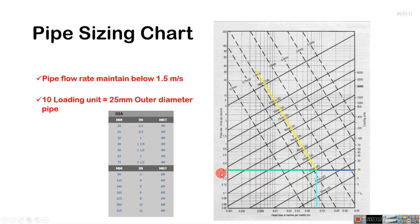Liters per second 0.3. For 10 loading unit value, we can select 25 millimeter outer diameter PVC pipe.